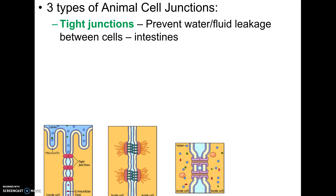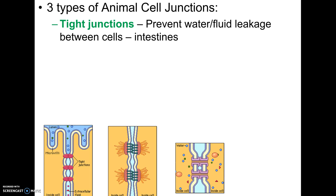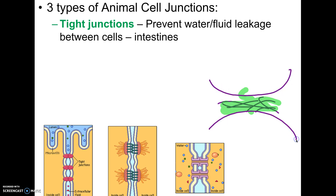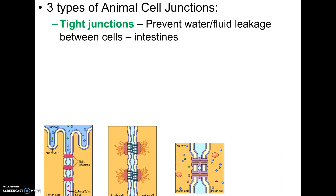The first one is called tight junctions. The purpose of tight junctions is to prevent any kind of fluid from leaking in between the cells. Fluids could technically flow between cells, but you have some places in your body where you don't want that — a really good example is your intestines. You don't want liquids leaking from your intestines into the lining cells. Tight junctions look like little buttons or welds, and they make fluid passage between cells impossible. The only way liquids get into a cell is to diffuse, which the cell can carefully control.